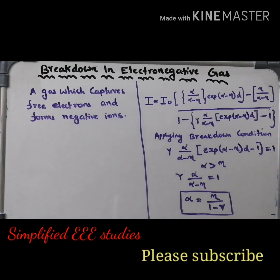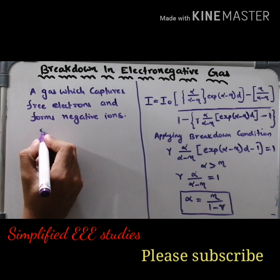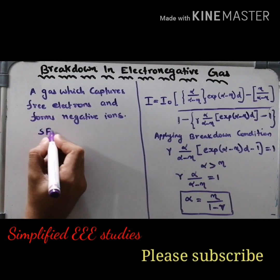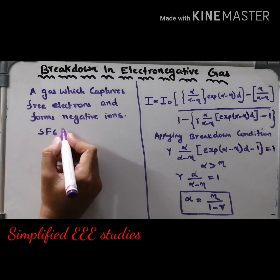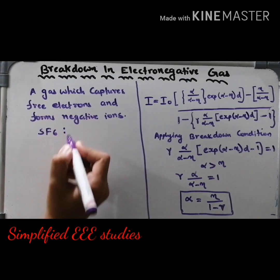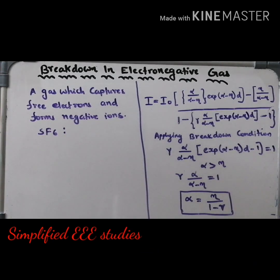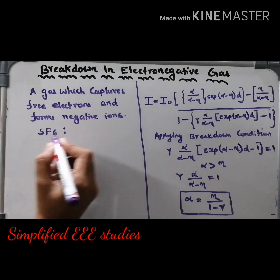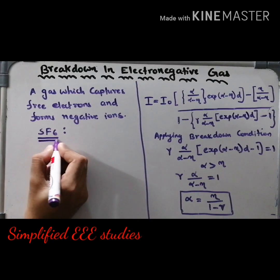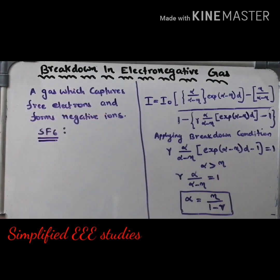In high voltage engineering, sulfur hexafluoride SF6 is one of the most popular electronegative gases. The application of sulfur hexafluoride is mainly in circuit breakers. A circuit breaker is a protective device used in power systems — it makes and breaks the circuit. So sulfur hexafluoride is one of the main examples of electronegative gas.